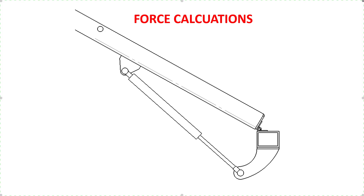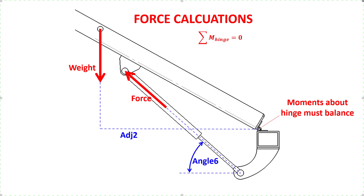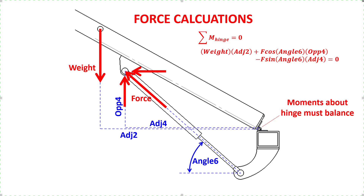Now that we have all the necessary lengths, we can complete the force analysis. The key is to realize that all moments about the hinge have to balance — the sum of the moments about the hinge must equal zero. Here's the weight acting vertically downward. The leverage distance for calculating its moment is the adjacent side of triangle 2, resulting in a positive moment since it's counter-clockwise. Here's the force of the spring, which acts along the axis of the spring since it's a two-force member. We break it into horizontal and vertical components. The horizontal component acts at the opposite side of triangle 4, giving a positive counter-clockwise moment. The vertical component acts at the adjacent side of triangle 4, giving a negative clockwise moment. Combining the two positive moments and one negative moment, which must balance to zero, and solving algebraically for the unknown force gives us the expression we can use in the spreadsheet.